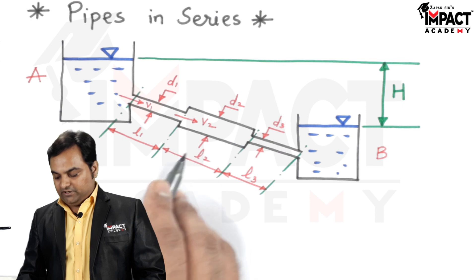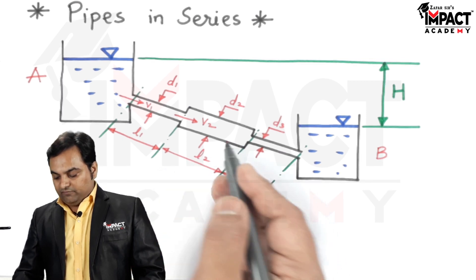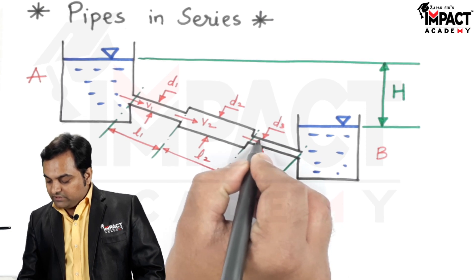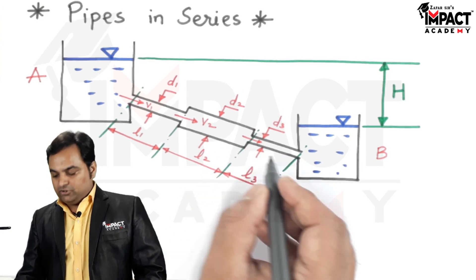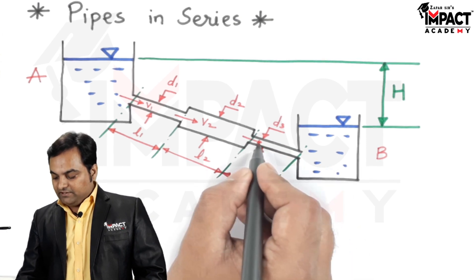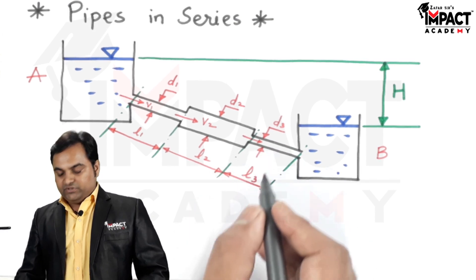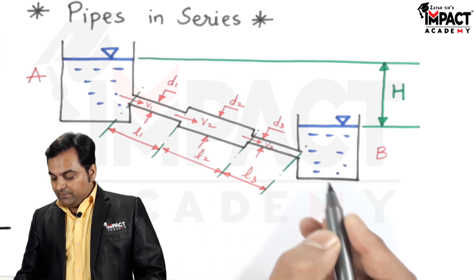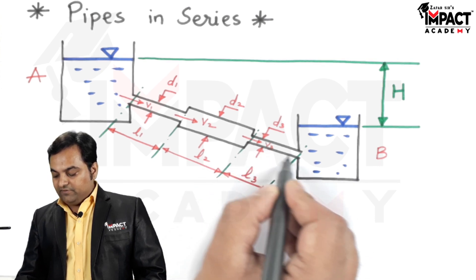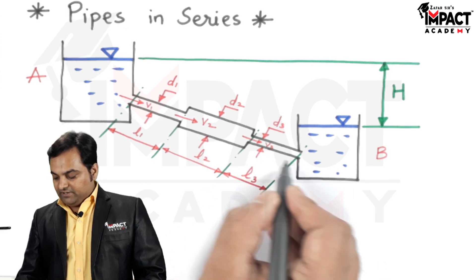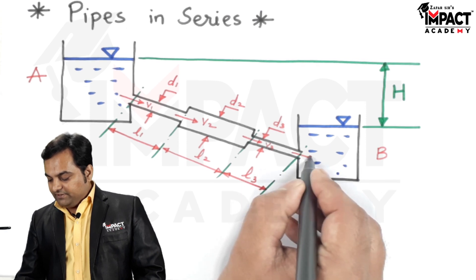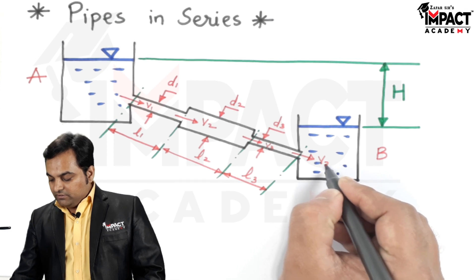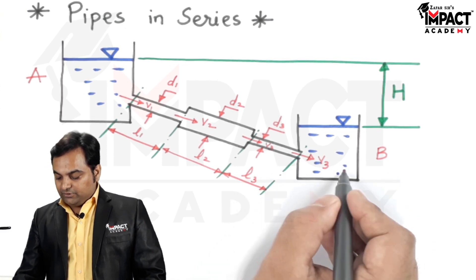Next, there will be head loss due to friction in pipeline 2, depending upon the length, fluid velocity, and material of the pipe. After that, the diameter suddenly contracts to D3, so there will be head loss due to sudden contraction, which is again a minor loss. The fluid then enters with velocity V3 and flows through pipeline 3, so again there will be head loss due to friction. Finally, the fluid exits into tank B with velocity V3, resulting in head loss due to exit of the pipe.